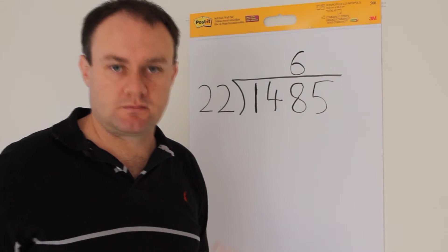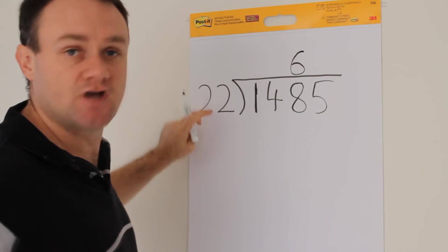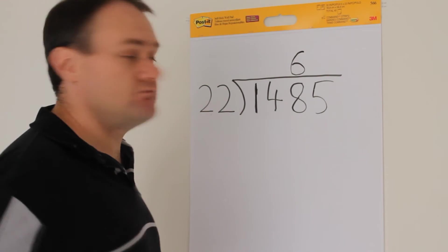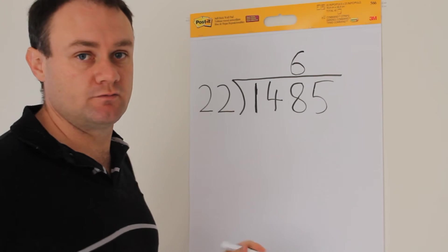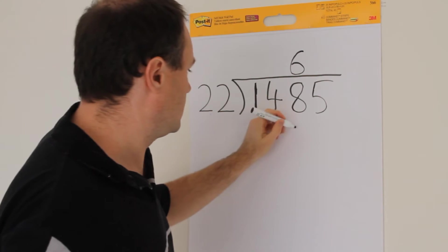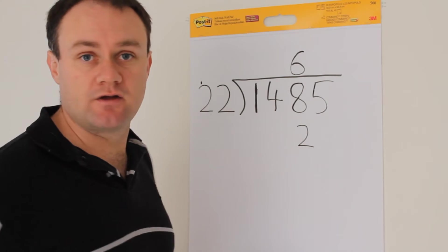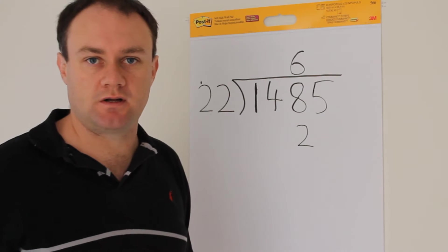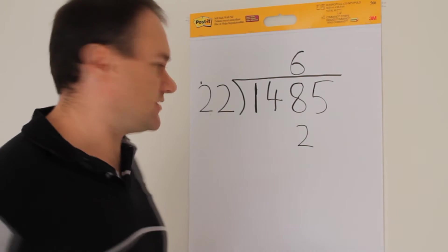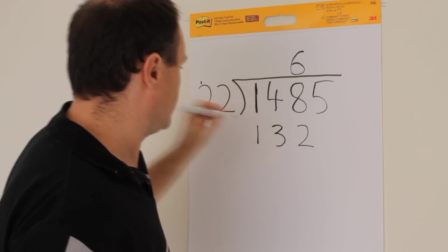So we've done the division, now we move to the multiplication. 6 times 22. And you do it simply as you would normally do multiplication. 6 times 2 is 12. Put down the 2 here. Carry the 1. 6 times 2 is 12, plus 1 is 13. 132.